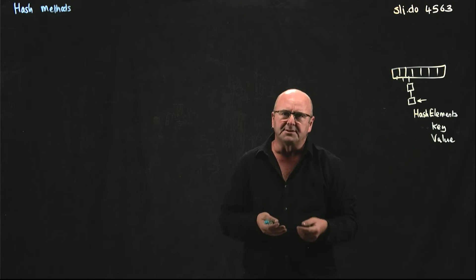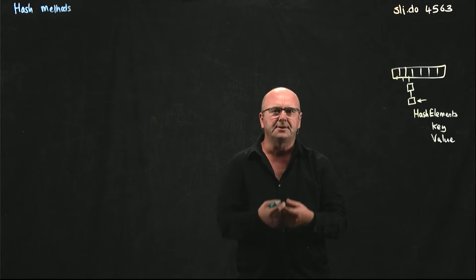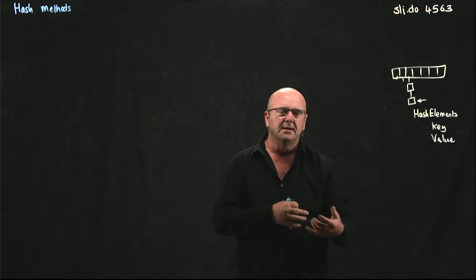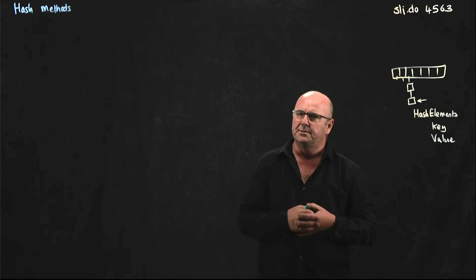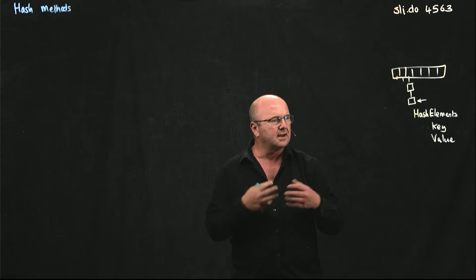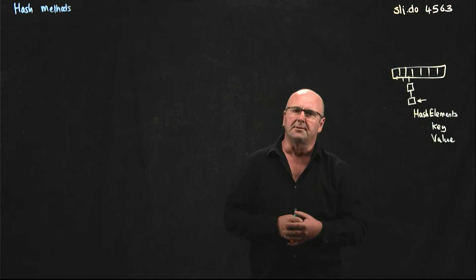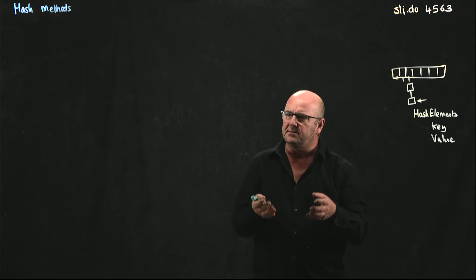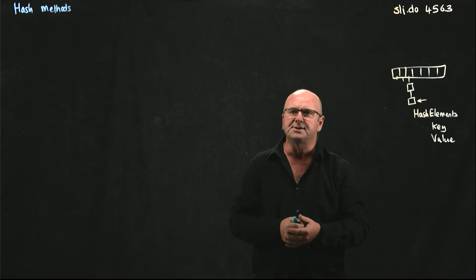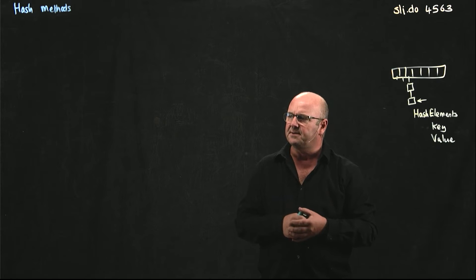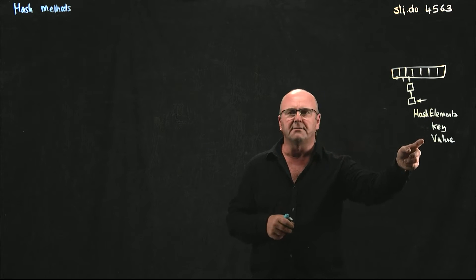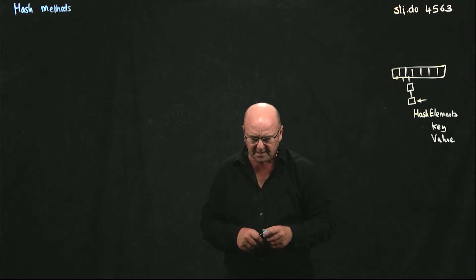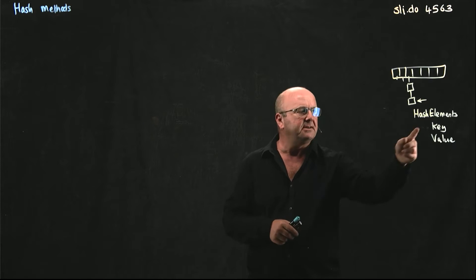Our users will be able to retrieve the value for a key, modify a key by giving it a new value, and go through all of the keys and get values associated with them. This is exactly like a dictionary in Python or a hash in Perl — any of those data structures where you take a key and a value and store them together. In Java, we're going to use generics.